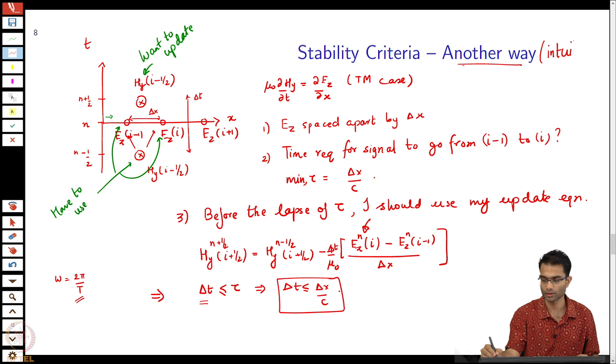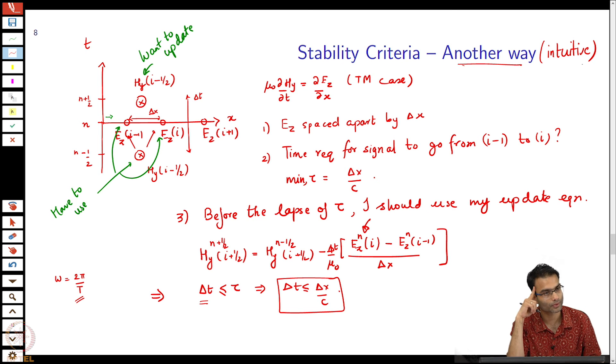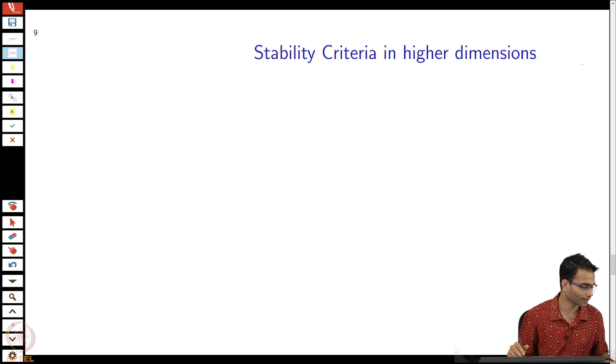What is nice about this stability criteria being derived in this intuitive way is that it is very easy to generalize this idea to higher dimensions. 1D is fine. A question you can ask is in 2D is the current stability criteria the same? Here you will find factors of root 2, root 3, etcetera.